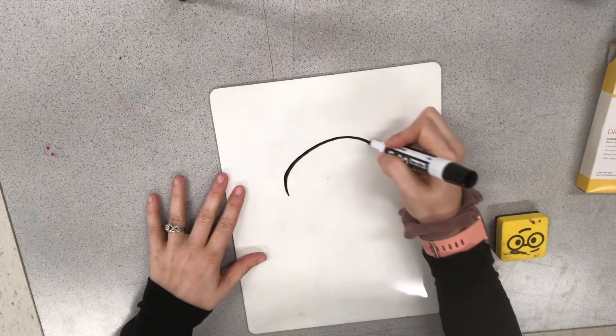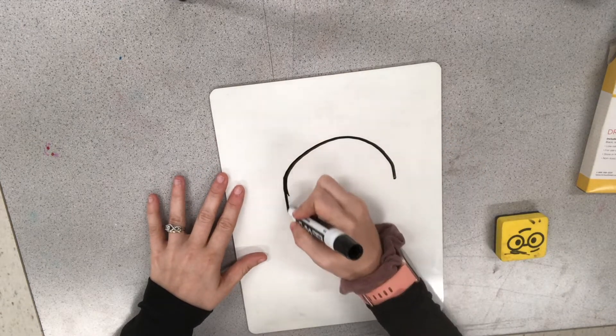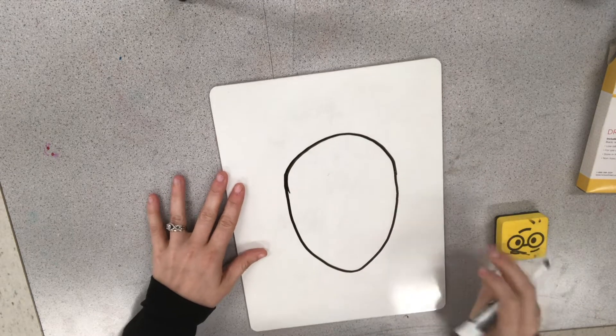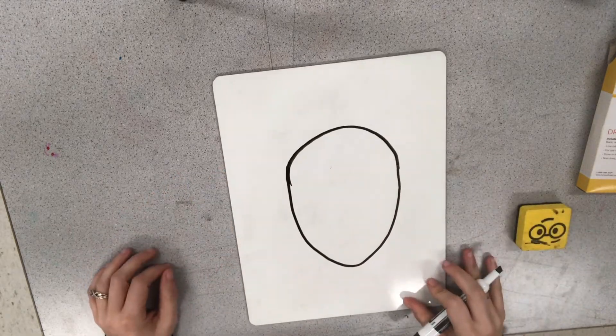So where our forehead is is kind of big and then it gets a little bit smaller towards the bottom where our chin is. So kind of an egg shape.